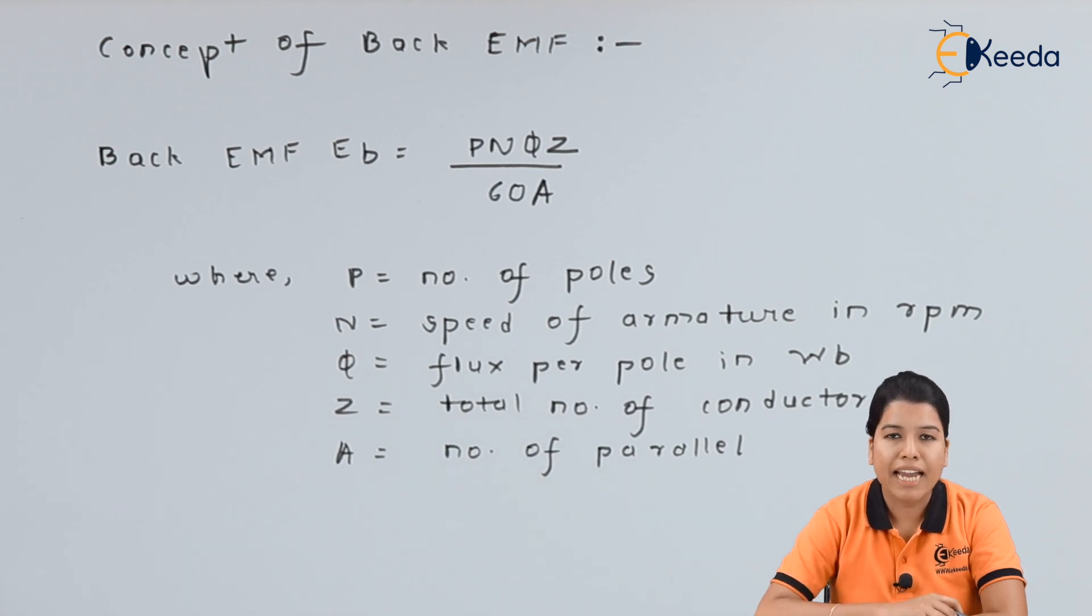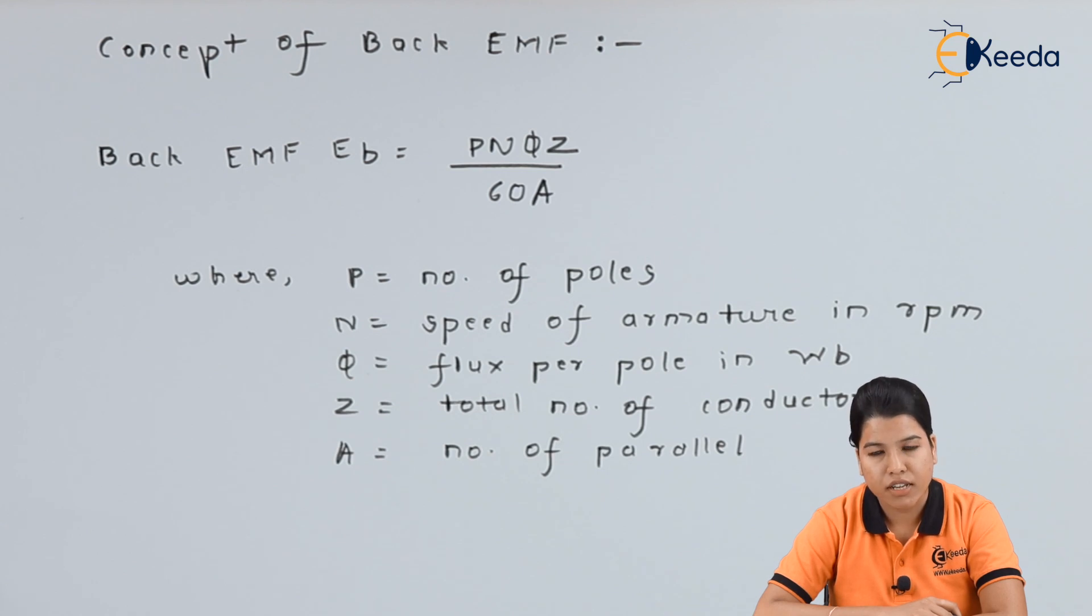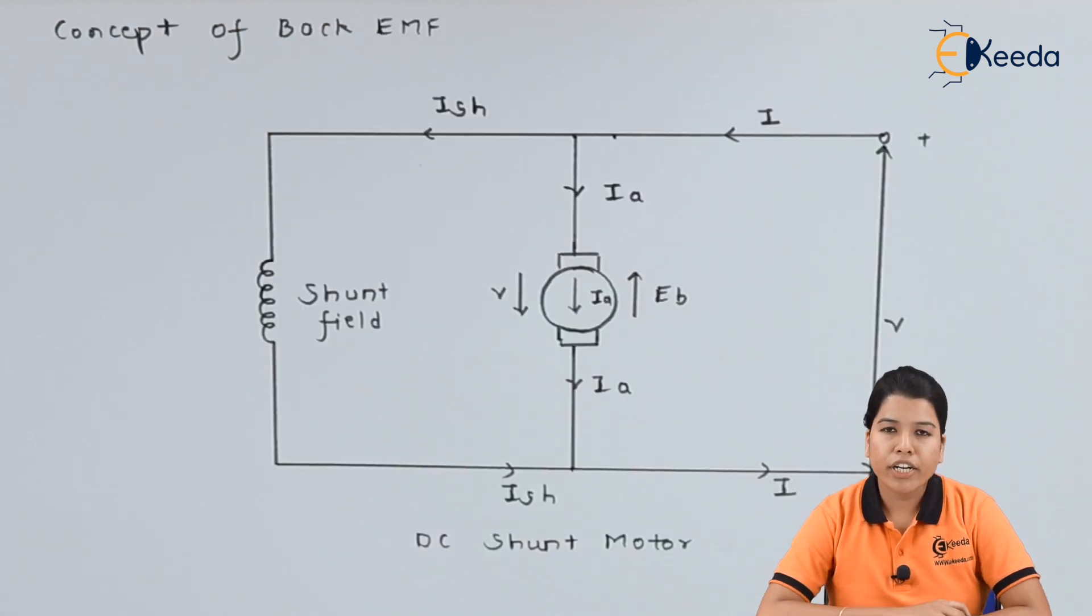Now this back EMF tries to oppose the supply voltage, but the magnitude of back EMF is always less than the applied voltage. In order to understand what is the importance of back EMF, consider a diagram of DC shunt motor as shown.